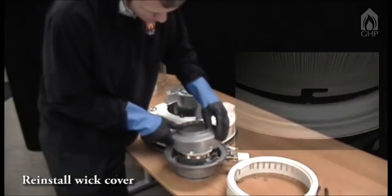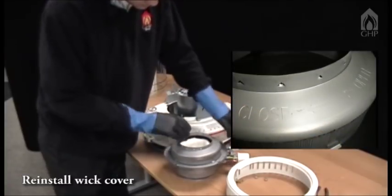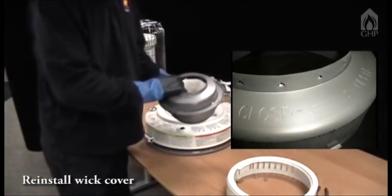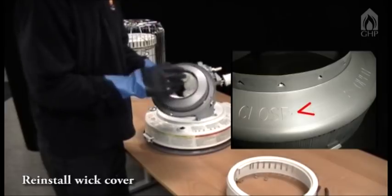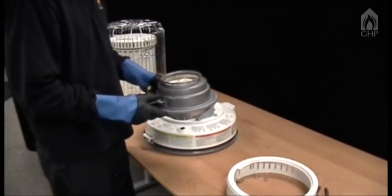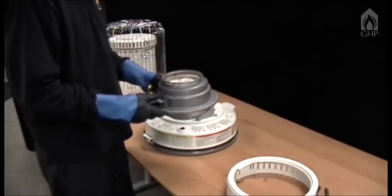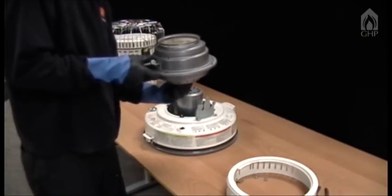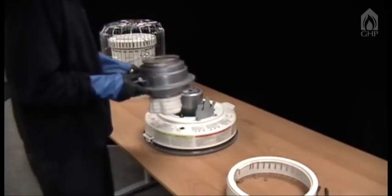Align the tabs on the wick cover with the four tabs on the bottom of the assembly. Snap into place and be certain of firm contact at all points. Pull lightly on the skirt of the wick to remove any slack.